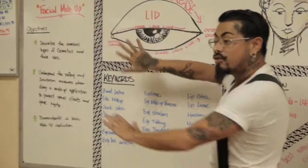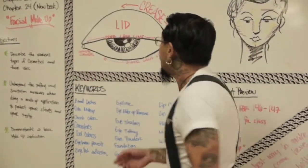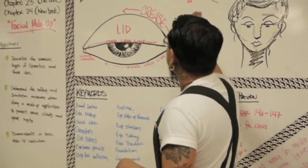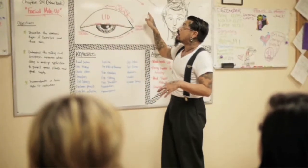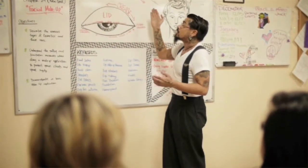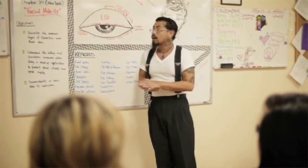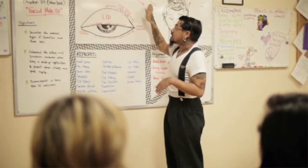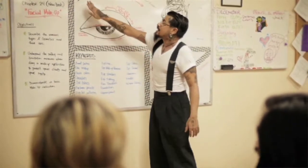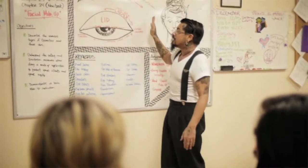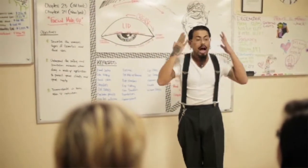We have the eye structure. We first start off with the area right underneath the brow — this is what we call the brow bone, or the highlight, or the brow highlight. This area is what we use to define the eyebrow shape, add light to the face, and open up the whole eye structure.